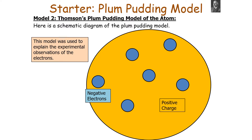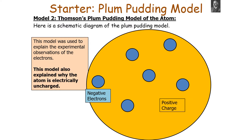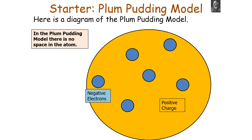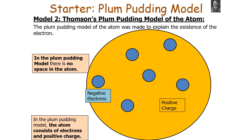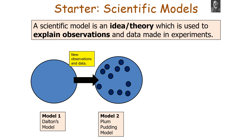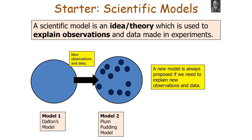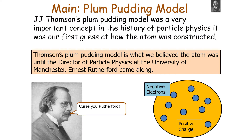This model was used to explain the experimental observations of electrons and also explained why the atom was electrically uncharged. The atom consists of both positive charge and electrons. J.J. Thomson's plum pudding model was a very important concept in the history of particle physics because it was our first guess at how the atom was constructed.